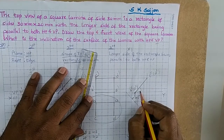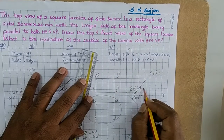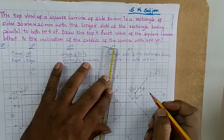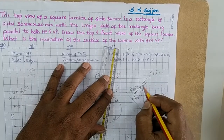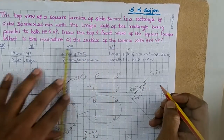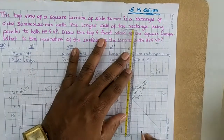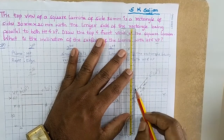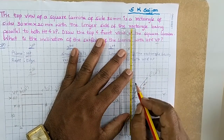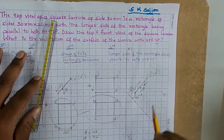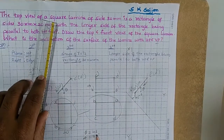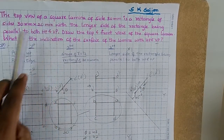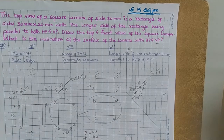By measuring the angle, we know that this angle is theta and this angle is phi. By measurement, theta is 48 degrees and phi is 42 degrees.